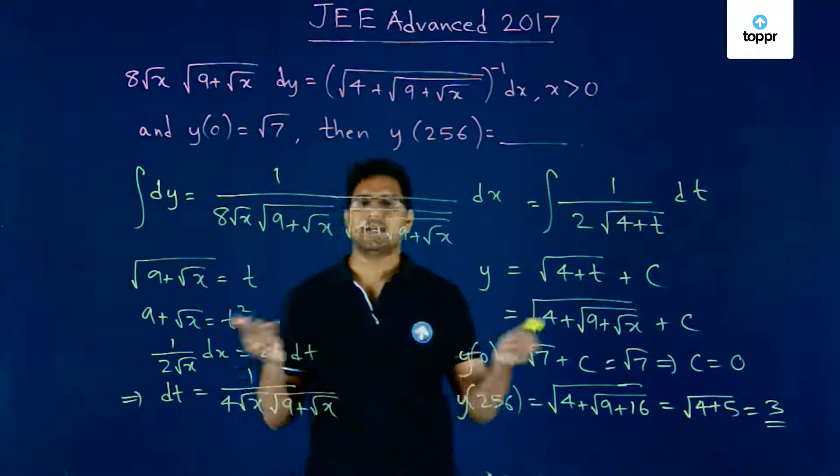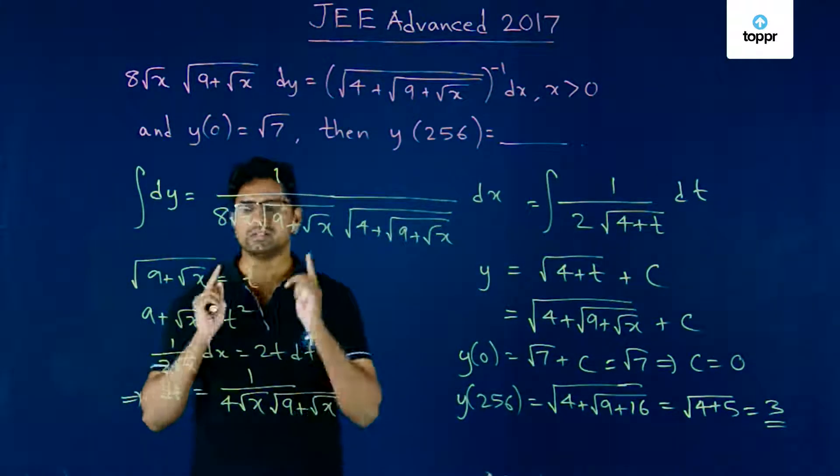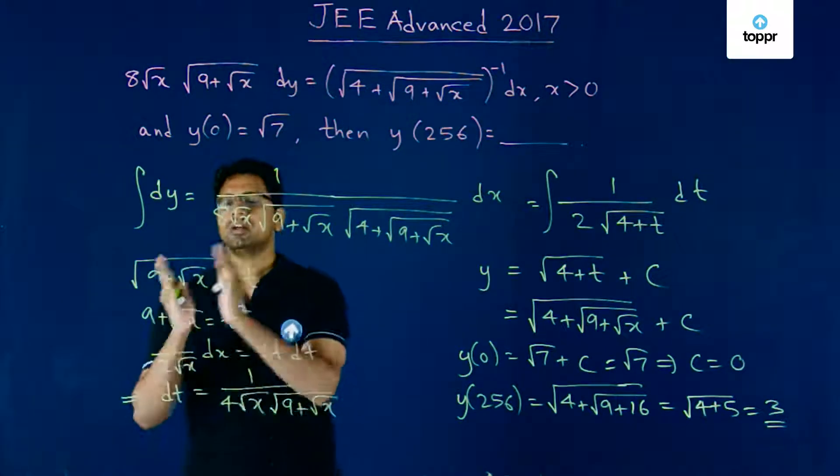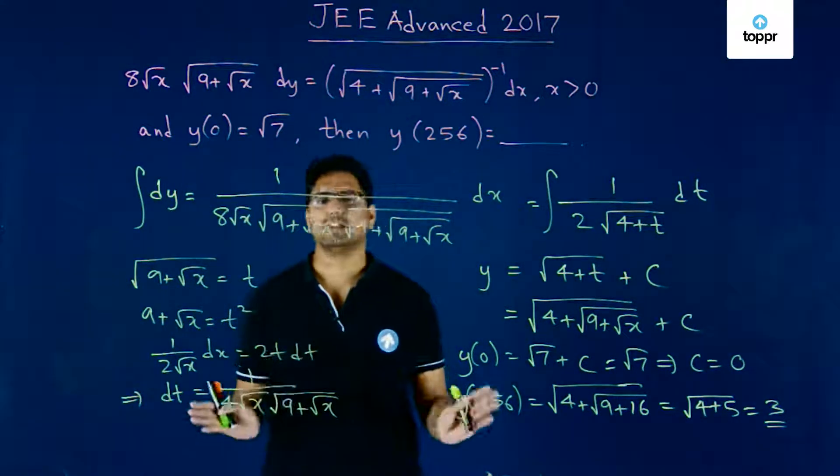As you can see, it's a routine calculation. The only thing which mattered in this problem was making the right substitution: 9 plus root x equals t squared.